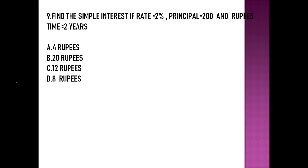The ninth question asks: find the simple interest where rate equals 2%, principal equals 200, and time equals 2 years. For finding simple interest, the formula is: Simple Interest = Principal × Rate × Time, divided by 100.